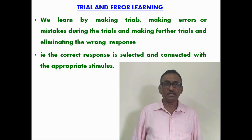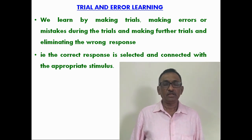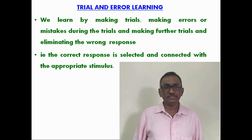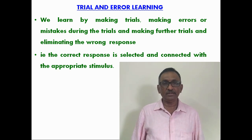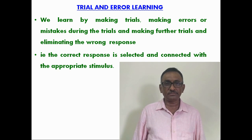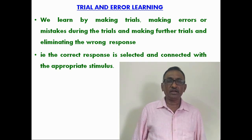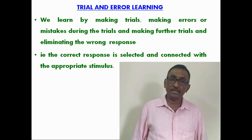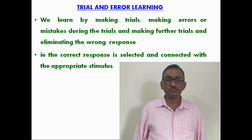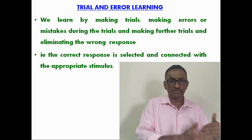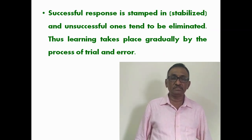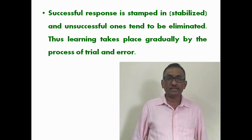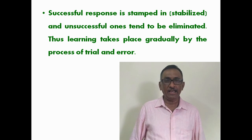Now, we have to understand the meaning of trial and error. We learn by making trials. During each trial, we make mistakes or errors. By conducting further trials, we might again make mistakes. Again and again, we conduct these trials. Wrong responses will be eliminated, and the successful response is selected and connected with the appropriate stimulus. The successful response is stamped in and unsuccessful ones tend to be eliminated. Thus, learning takes place gradually through the process of trial and error.